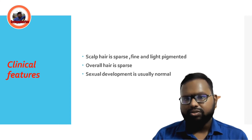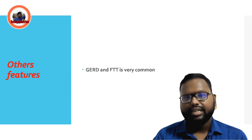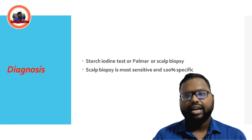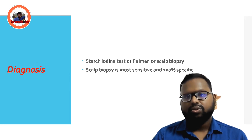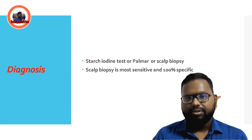Sexual development is visibly normal. Common complications include GERD and failure to thrive. For diagnosis, a starch iodine test or palmar or scalp biopsy can be used. Scalp biopsy is more sensitive and 100% specific for this condition.